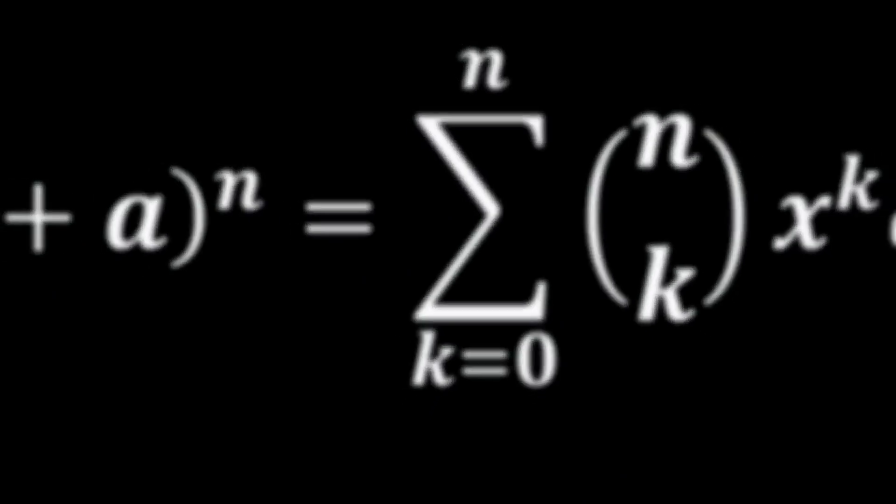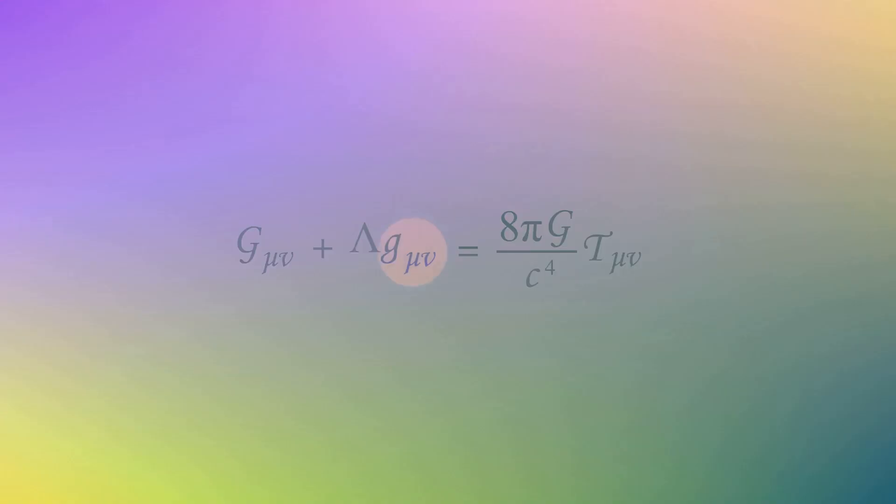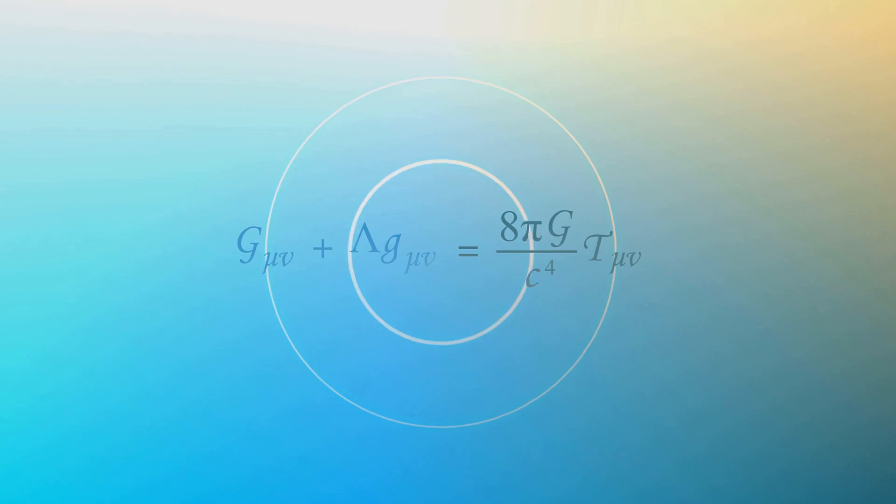The time derivative, denoted as ∂f/∂t, tells us how the distribution function changes over time. If this term is positive, then the probability of finding a particle in a certain state is increasing. If it's negative, the probability is decreasing.